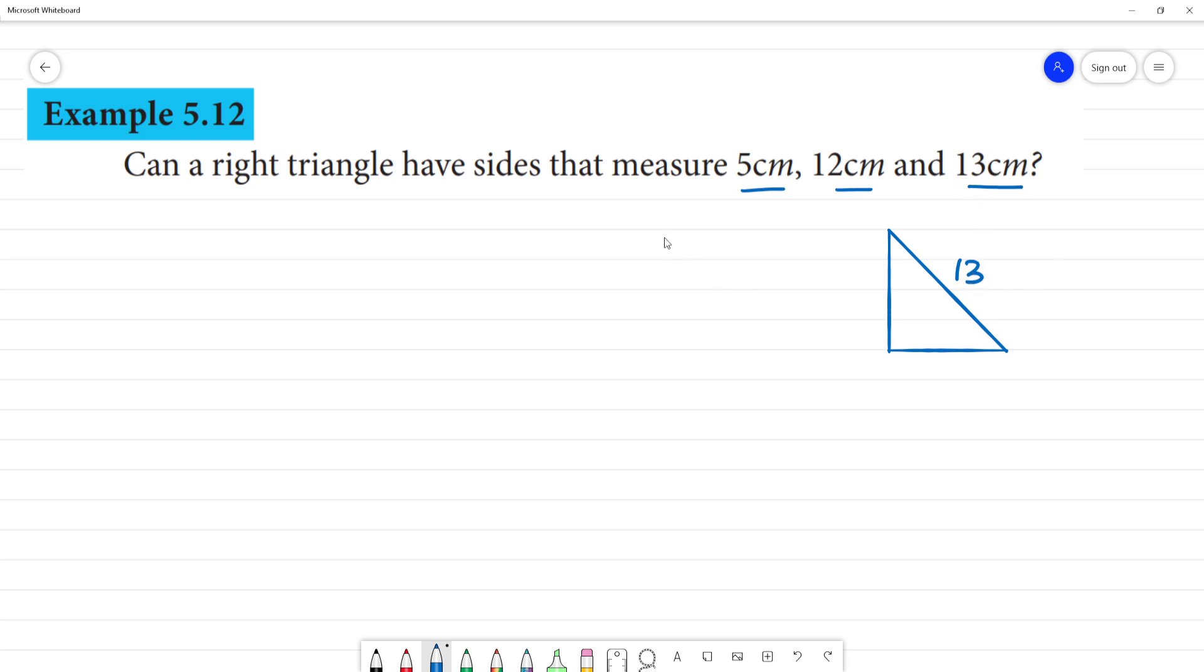13 is the hypotenuse. Hypotenuse will always be greater. If we look at the other sides, 5 and 12.